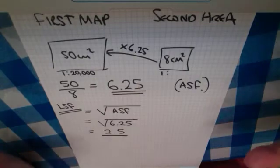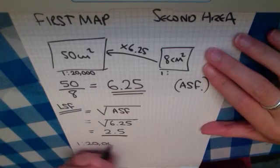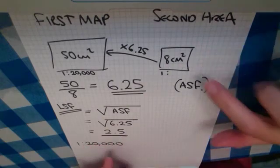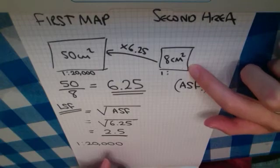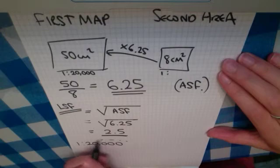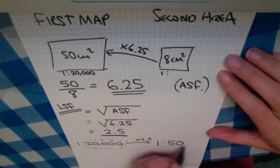Now let's think about this very carefully. The first map has a scale of 1 to 20,000, and we need to now think about how we would find the scale of this one. And we've already talked about how this is zoomed in. So hopefully you can see that we're going to take this 20,000 and we're going to times it by 2.5 to get our final answer of 1 to 50,000.